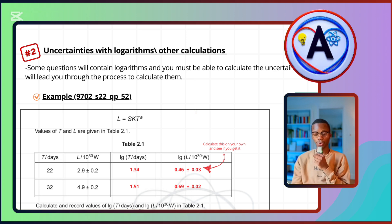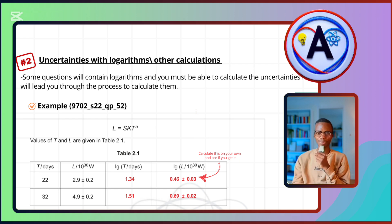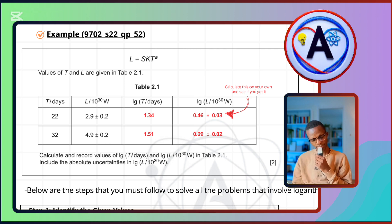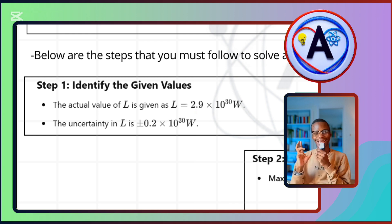The second category of equations involves uncertainties with logarithms. Some questions will contain logarithms and you must be able to calculate the uncertainties for those. The example is from May/June 2022 Question Paper 5.2. We're given l = skt^a, values of t and l are in the table, and we're asked to calculate log t and log l and include the absolute uncertainties in log l.